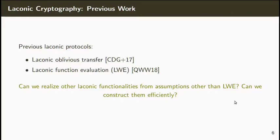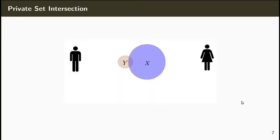This raises two questions. The first is whether we can build laconic protocols for other functionalities from assumptions other than LWE. The second is whether we can build efficient laconic protocols. In this work, we focus on laconic protocols for a specific functionality, namely private set intersection. Here the receiver has a large input set X and the sender has a small input set Y. At the end of the protocol, the receiver should learn the intersection of both sets and nothing else.